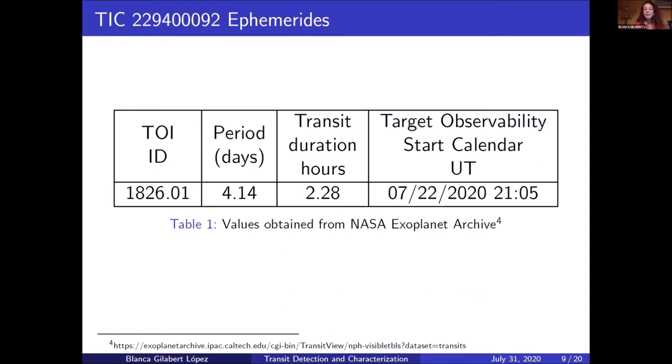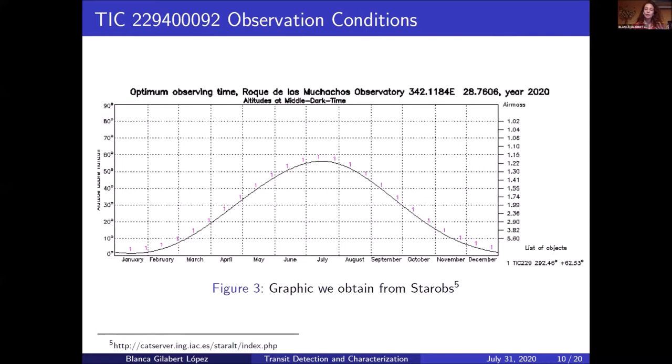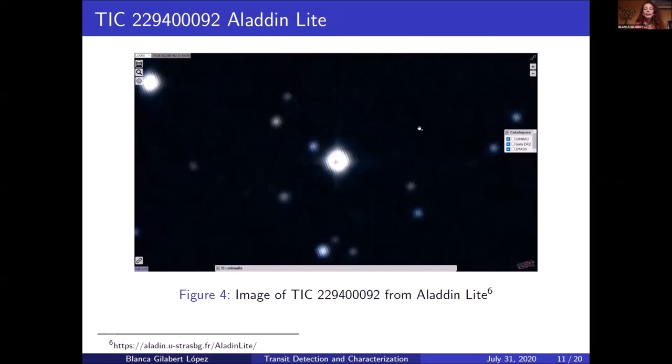We also use NASA exoplanet archives in order to make sure that our target star had transit occurring during the last week of July. So we also need to make sure of the elevation of the star. This graphic shows in the y-axis the degrees and the x-axis we have the months. So it shows the elevation of the star over the year. For an optimal observation, we have to make sure that it's at least 30 degrees of elevation. In this case, by the end of July, we have around 50 degrees. So it's optimal. We also need to make sure that our target star is not very close to a bright source of brightness, because that could disturb the observation of the ground-based telescope.